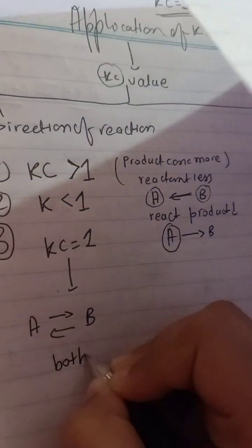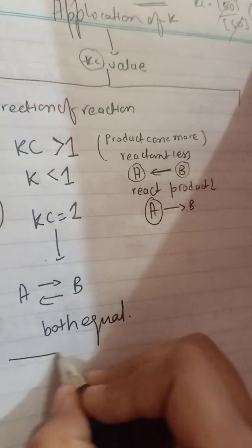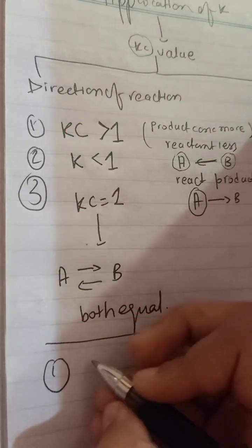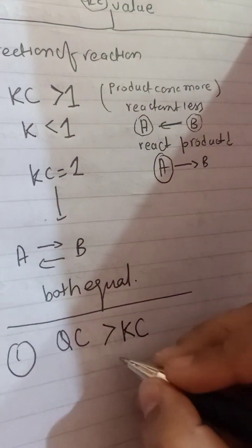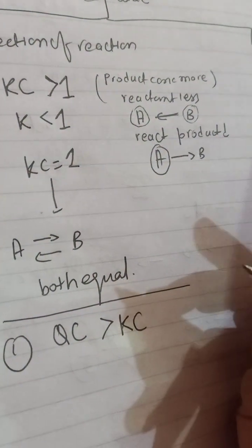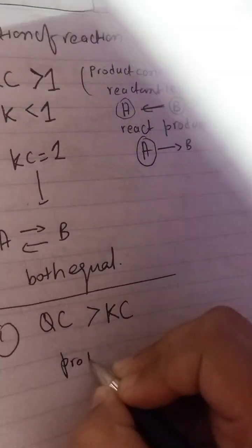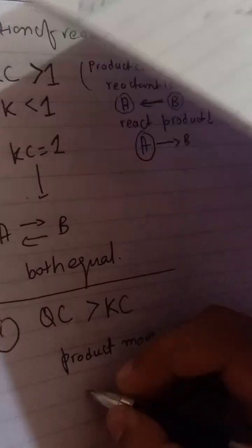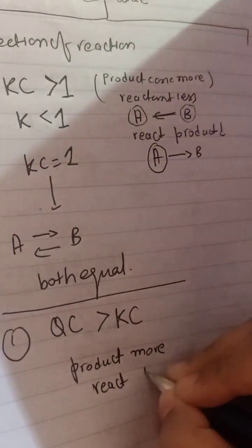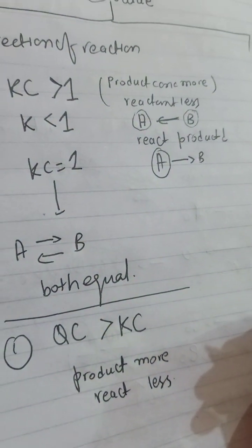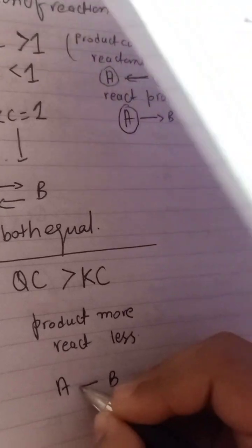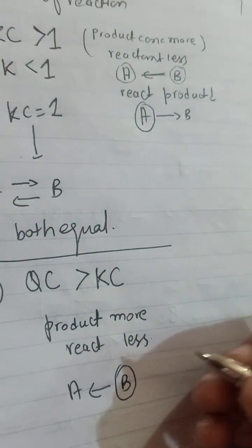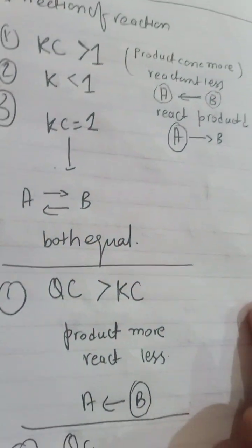It depends upon the direction. For example, if Qc is more than Kc, it means product concentration is more and reactant concentration is less, so the reaction will proceed in the backward direction, because the product concentration is more.